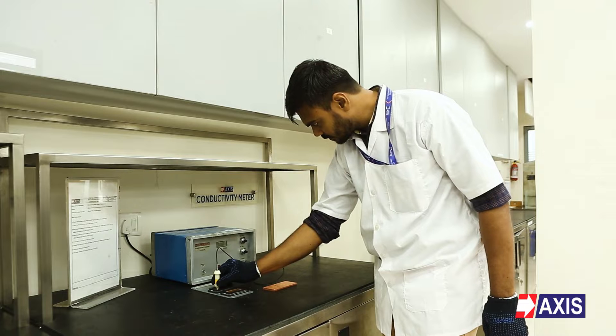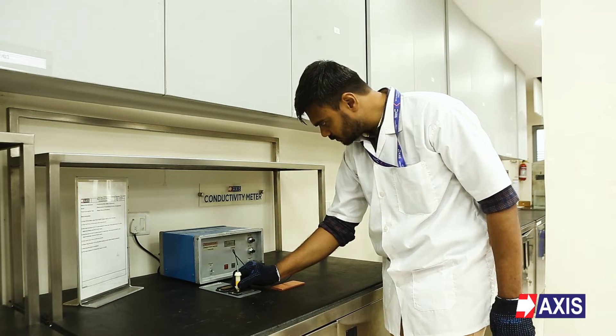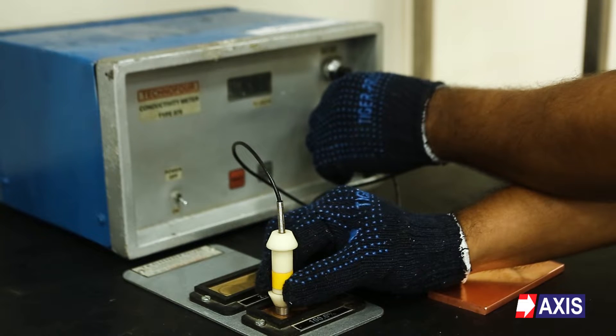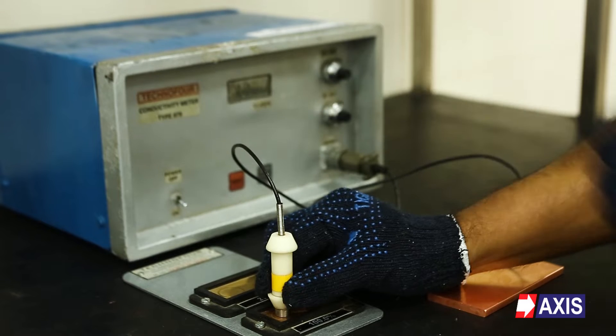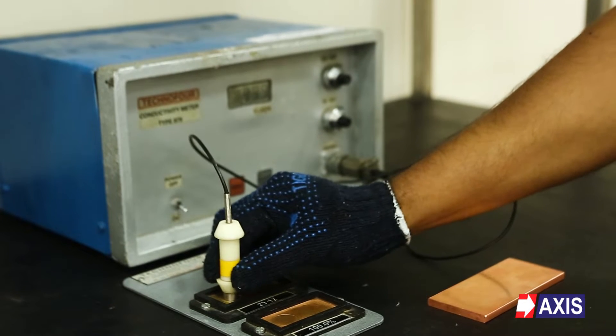Procedure. First, the machine probe needs to be calibrated in line with the values mentioned on the master plate. After calibration is done with the master plate, keep the probe on the test piece, example, copper lug, copper busbar or any other product, to measure the electrical conductivity.